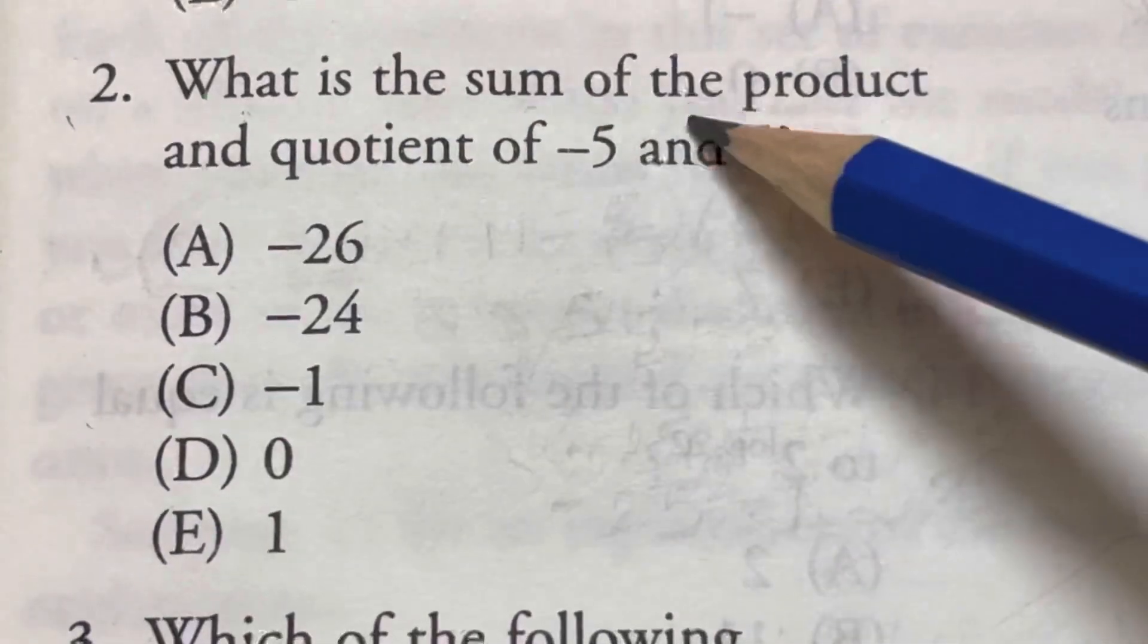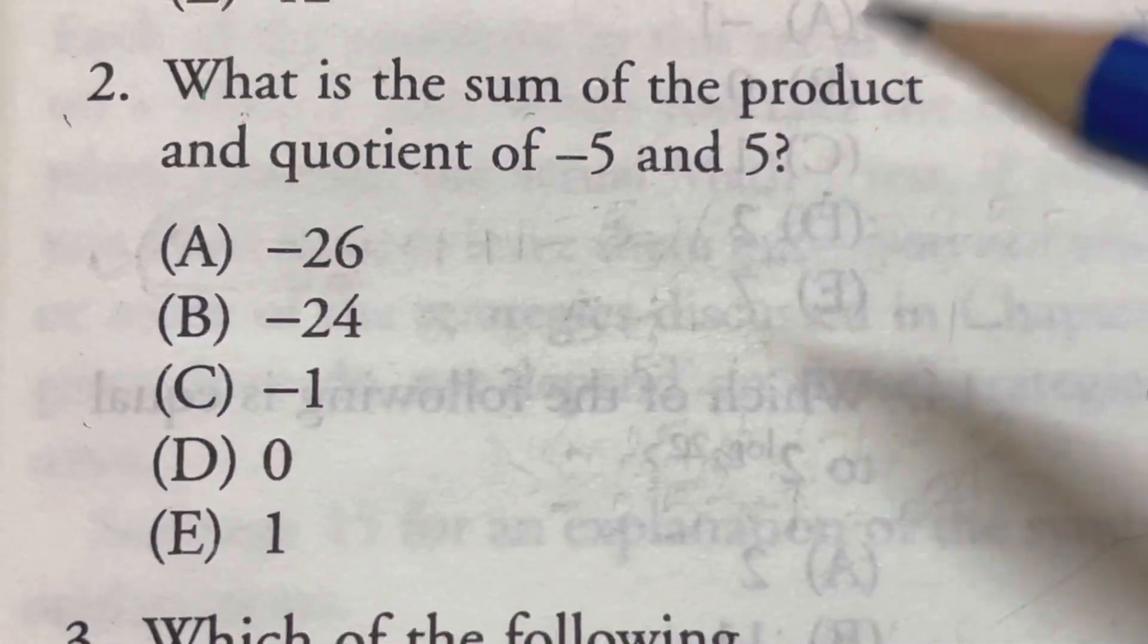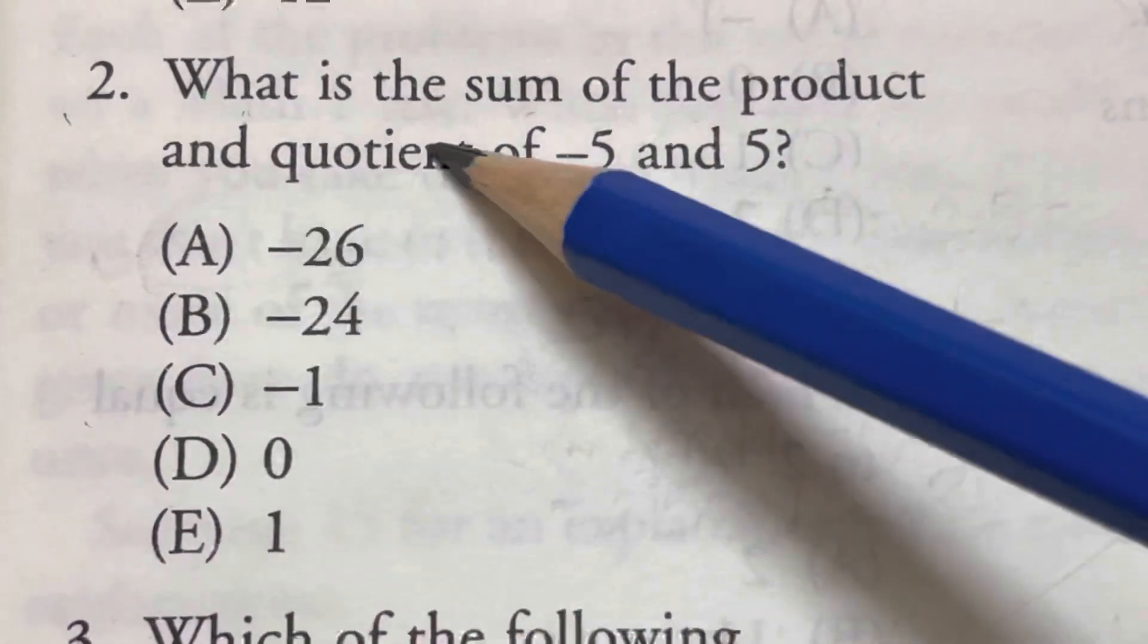Okay, what is the sum of the product and quotient of minus 5 and 5? So what do you mean by product and a quotient?